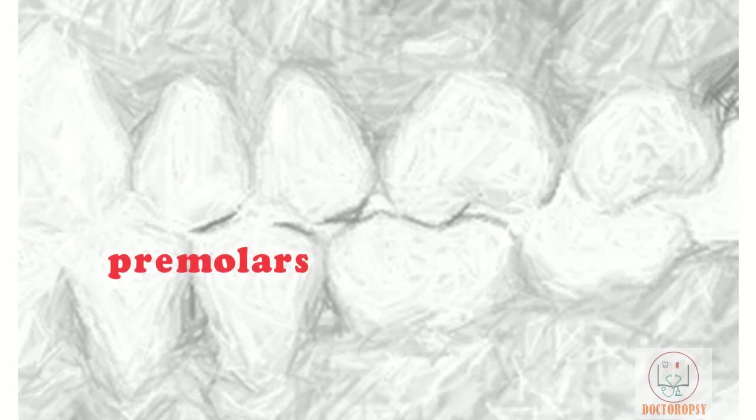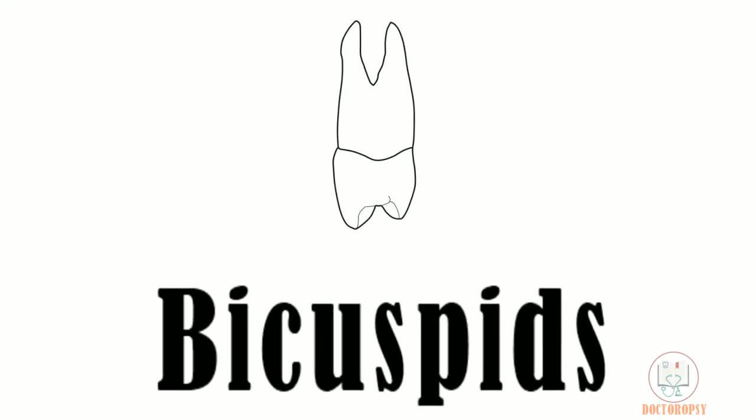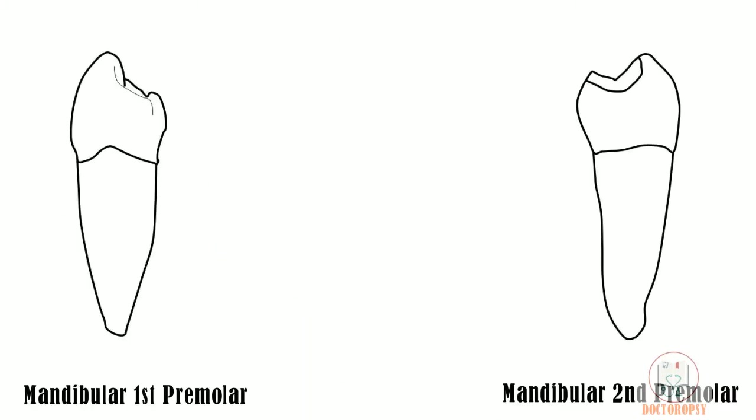The term premolar means the tooth which is just anterior to the molars. They have also been called bicuspids because they have two cusps, though in the case of mandibular premolars this name becomes a misnomer.